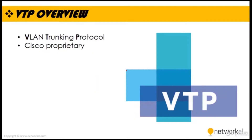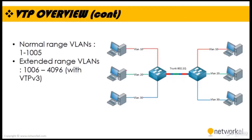VTP, VLAN Trunking Protocol, is a Cisco proprietary protocol that propagates the definition of VLANs on the whole local area network in the same VTP domain, and provides easy management because you do not manually add or delete the VLANs.